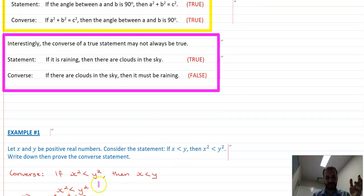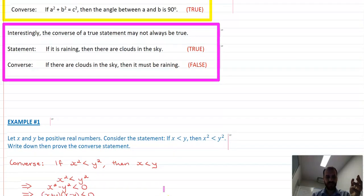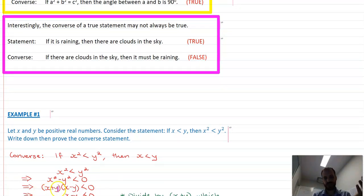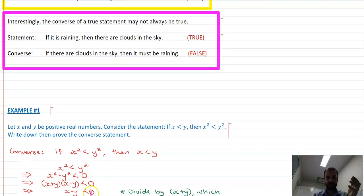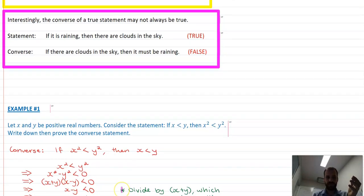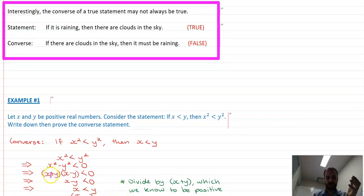X squared is less than Y squared. X squared minus Y squared is less than zero. Split it up into X plus Y times X minus Y, because that's the difference of two squares. X minus Y is less than zero. That is dividing both sides by X plus Y, because X plus Y is positive. And then X is less than Y.